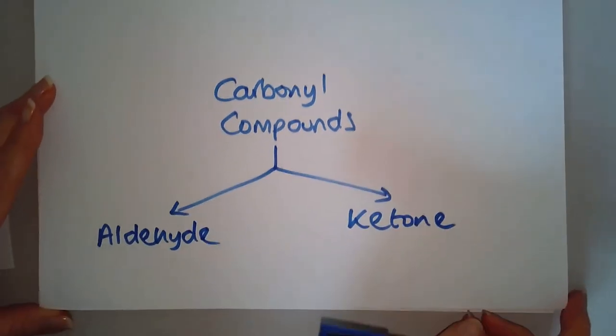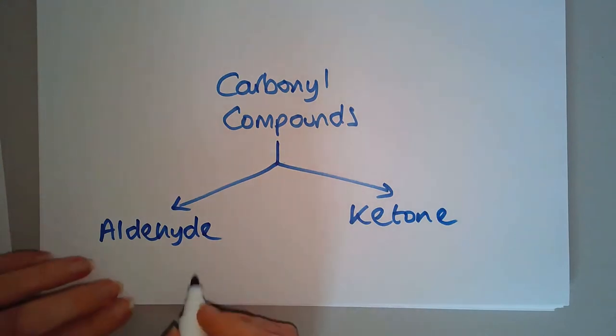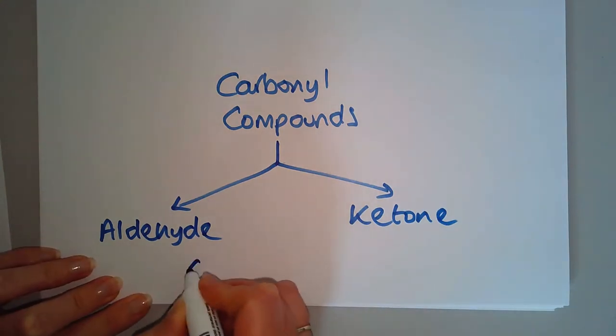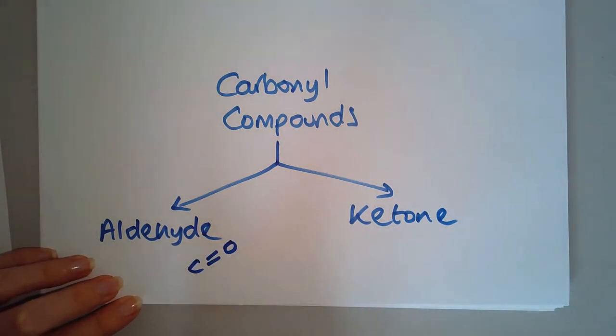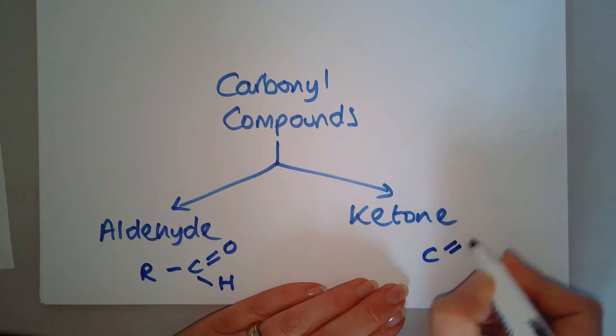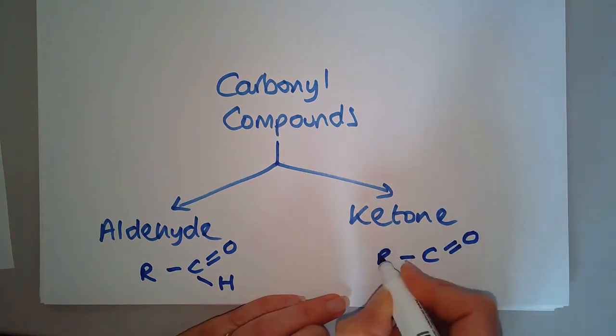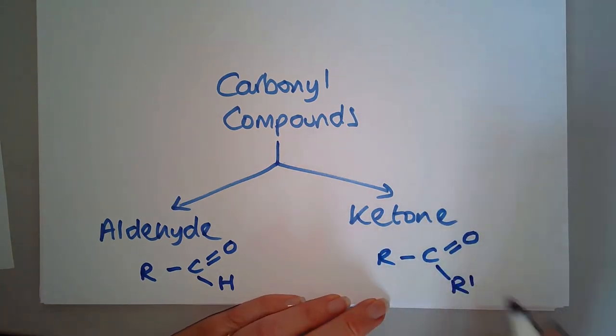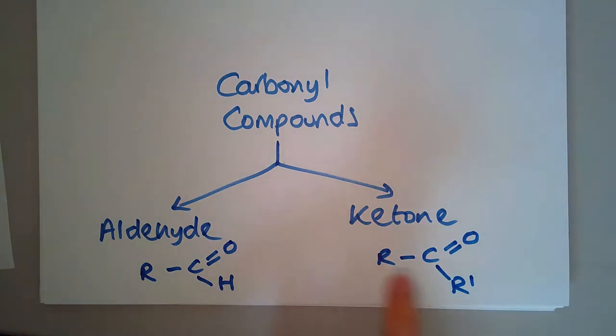The difference between the two is the position of the C double bond O. In an aldehyde, the C double bond O will be at the end of the chain, so this will be a hydrogen. The ketone will have the C double bond O in the middle of the chain somewhere, so these would be carbons here.